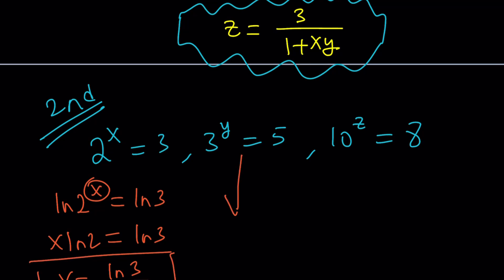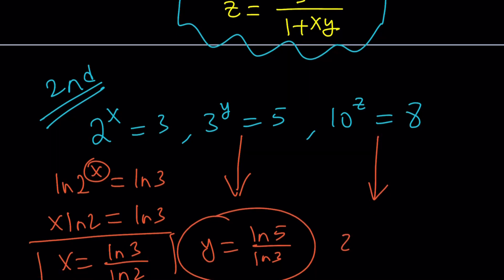Similarly, if you do it for y, you're going to get ln 5 over ln 3. Easy, right? And then for this one, if you do it, you're going to get z equals ln 8 over ln 10. I mean, it makes sense, because now everything is a ratio of 2 ln, and obviously, this shows you that x, y, z are all constants.